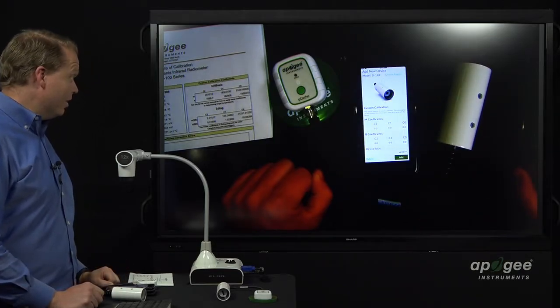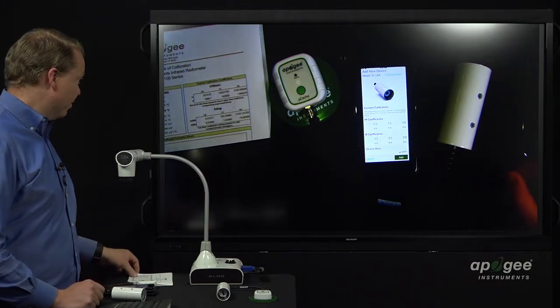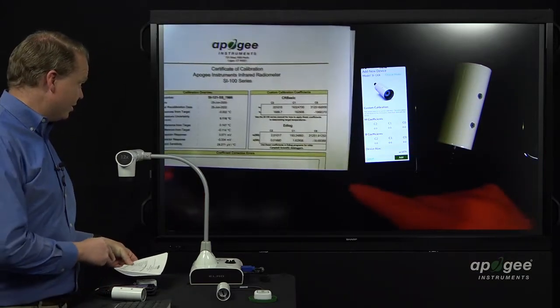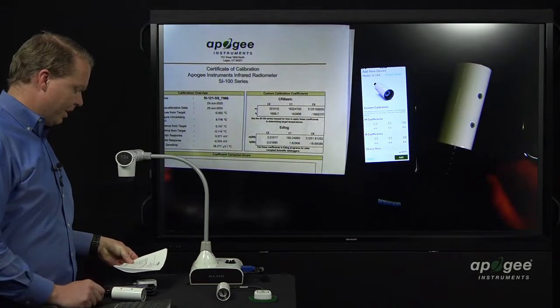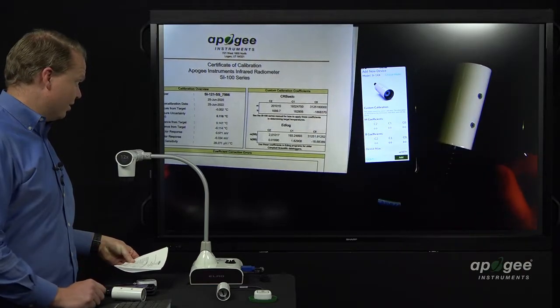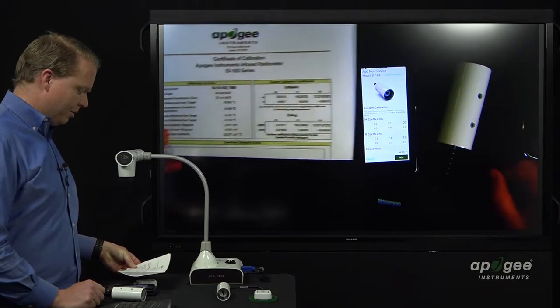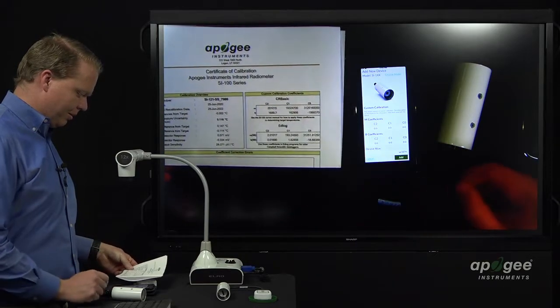And now, it's asking us for the M coefficients and the B coefficients, which we can see over here on our sheet, this top row and this bottom row. And really, as you can see, these are the same, they're just written in different multiples of each other. So, we'll go ahead and just do the CR basic model.